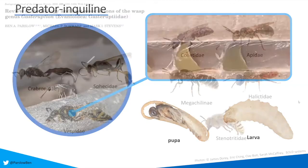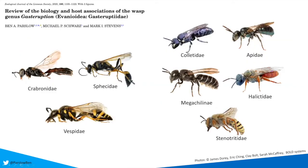What we don't really know very much about is the host associations in this group. Part of my research was to work out everything we did know, and what we found is that there were five main bee families they target: the Colletidae, Apidae, Megachilidae, Halictidae and Stenotritidae, as well as three main wasp families — the Crabronidae, Sphecidae and Vespidae. We also found that the wasp records were quite dubious — we weren't really sure if they were actual host associations or simply cases of nest usurpation, with a wasp taking over a cavity-nesting bee's nest.